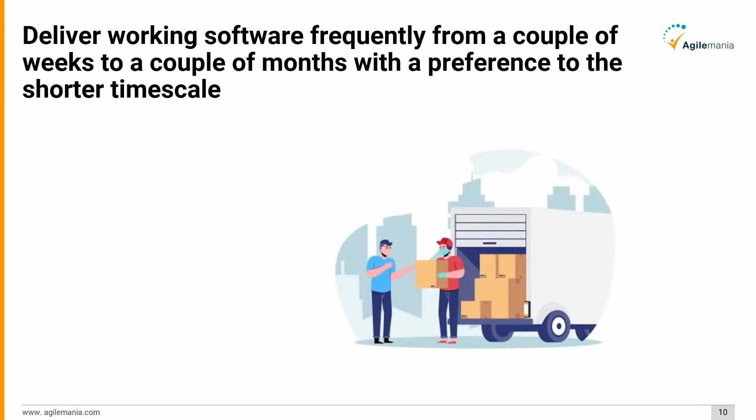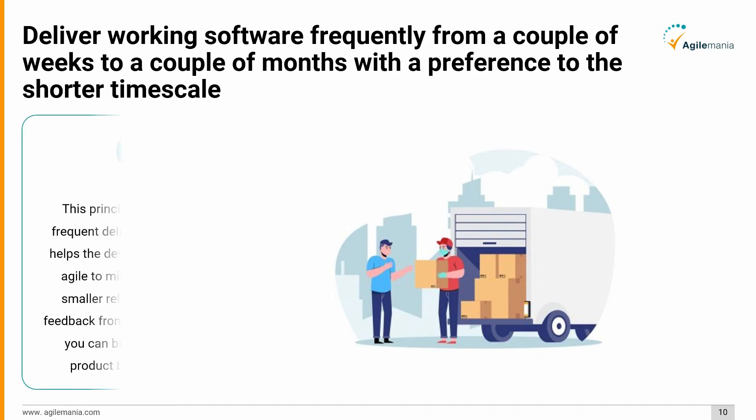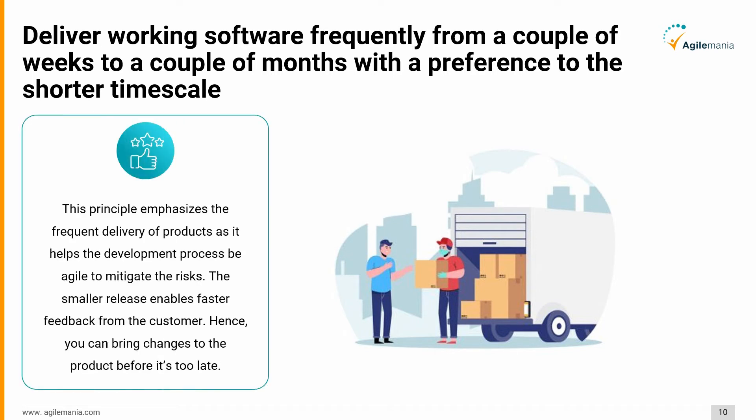The third principle in detail: deliver working software frequently, from a couple of weeks to a couple of months, with a preference to the shorter timescale. Frequent delivery keeps the development process agile and helps mitigate risks. Smaller releases enable faster feedback from the customer, so you can bring changes to the product before it's too late.